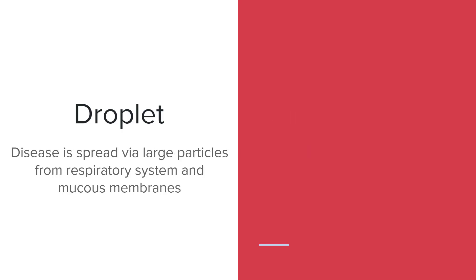Droplet transmission is disease spread via large particles from the respiratory system and mucous membranes. Droplet infection is caused by large droplets from an infected individual's respiratory tract. The moisture from the breath can cause them to suspend in the air, though these droplets are heavier and tend to fall quicker than airborne particles. The range for droplet infection is considered three to six feet, and the droplets can infect another person via their mucous membranes — eyes, nose, and mouth.